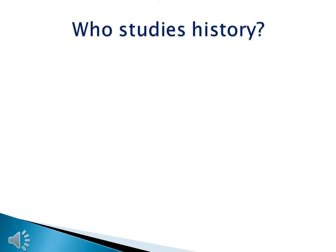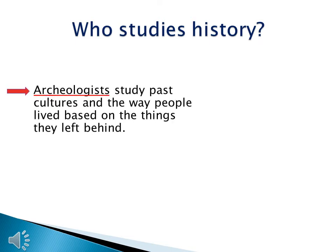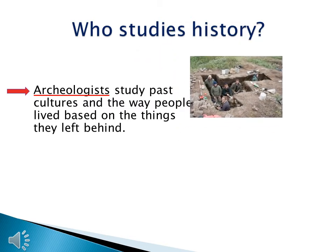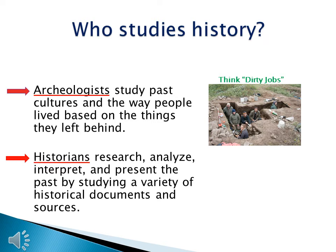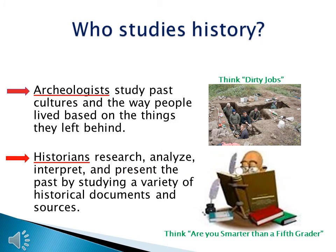History and time aren't the only two things that need to work together. Two groups of people are going to come together to explain what happened in our past. Group number one are archaeologists, who study past cultures and the way people lived based on the things they left behind — artifacts. Historians research, analyze, interpret, and present the past by studying a variety of historical documents and sources. Without both of these people working together, we don't know what happened in the past.